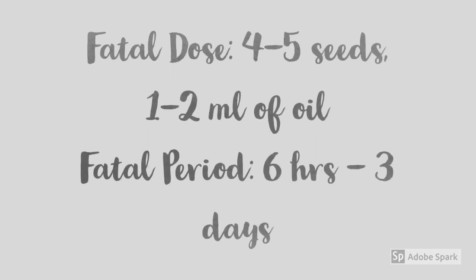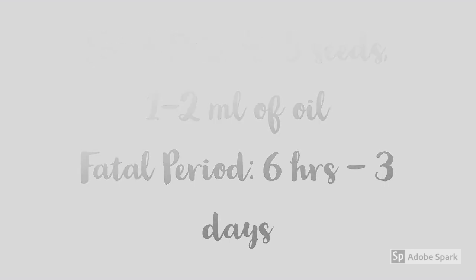The fatal dose for Croton tiglium is about 4 to 5 seeds and 1 to 2 ml of oil, whereas the fatal period is about 6 hours to 3 days. Fatal dose and fatal period were discussed in our earlier video on Ricinus communis.